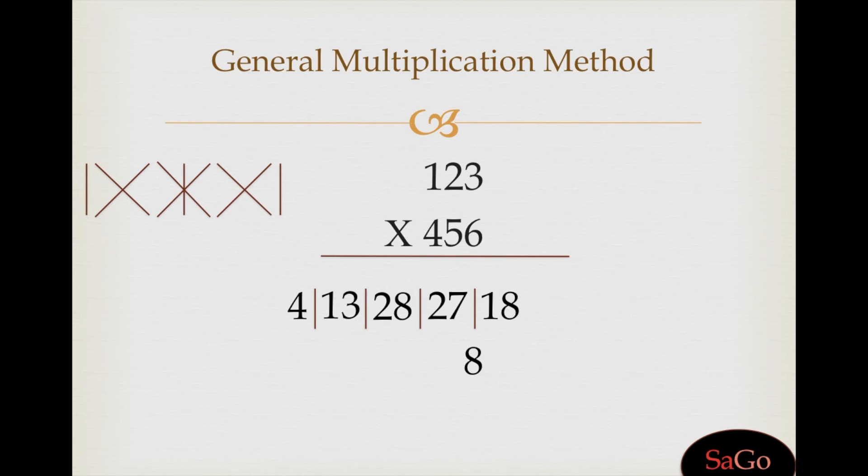Adjust the equation: the last digit as it is, 8; 1 plus 7 is 8; 2 plus 8 is 10, write 0, 1 for the carry; 2 plus 3 is 5; 1 plus 4 is 5; last digit as it is, which is 8 again, 8; 0 as it is; carry 1 to 5: 1 plus 5 makes 6; and 5. 56,088 is the answer.